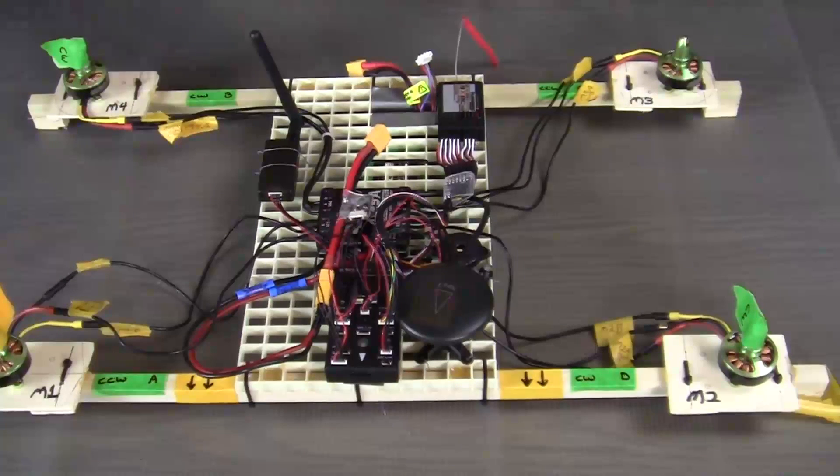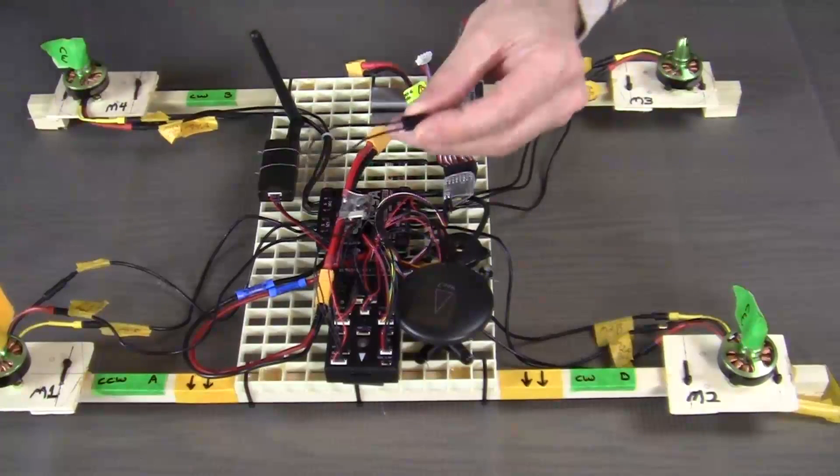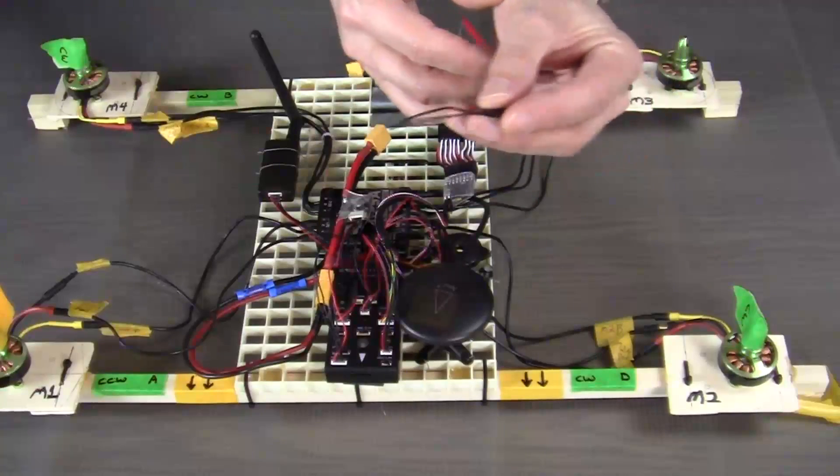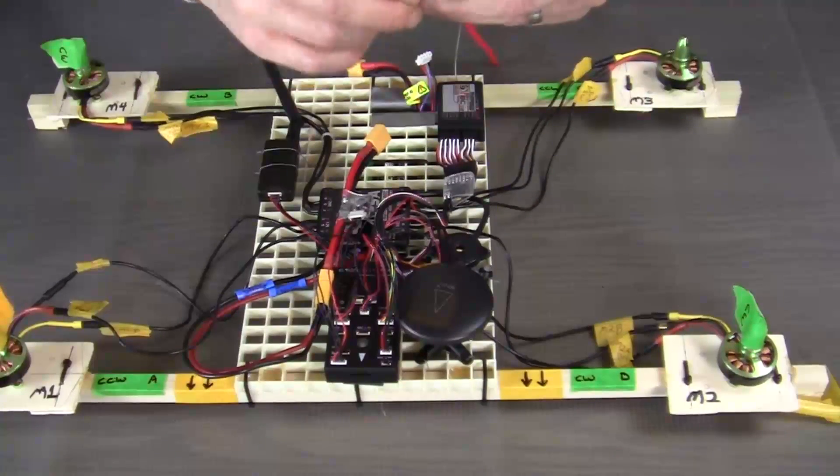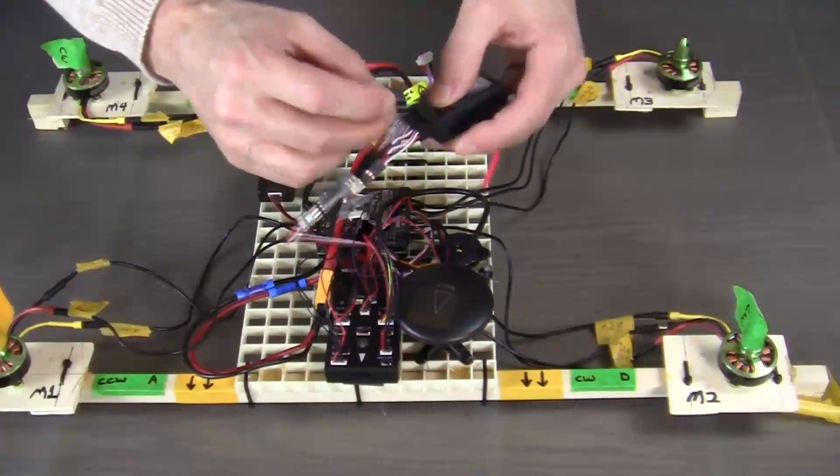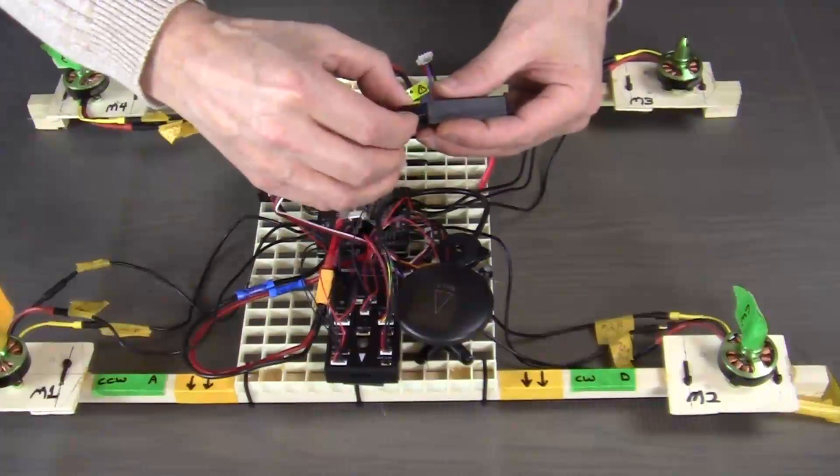So let's get started. Our first step in binding the radio receiver and transmitter together is to take this little bind wire right here and connect it to the bind port on the receiver just like this.